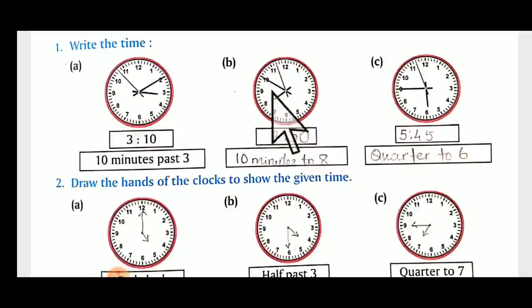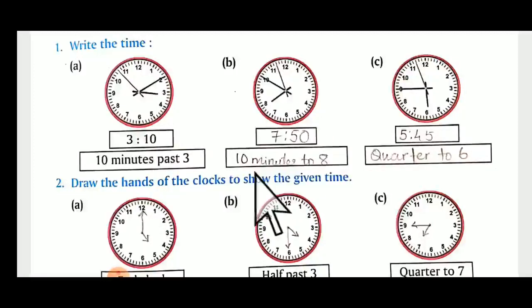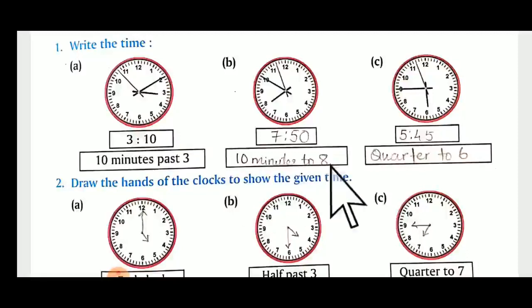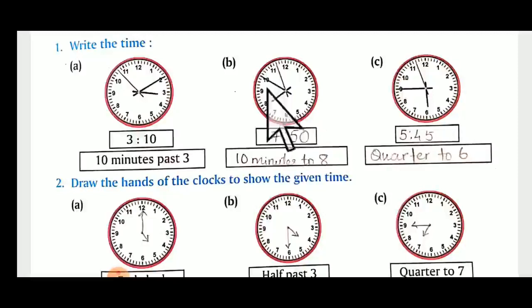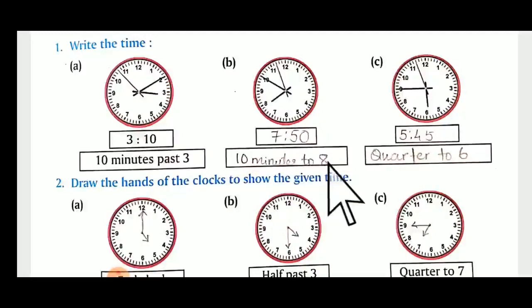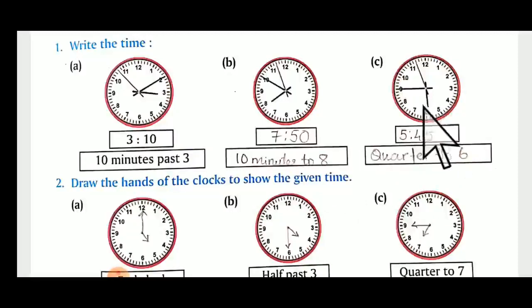If the minute hand reaches to twelve it will be eight o'clock. So how will you write in words? Ten minutes to eight. That means if it is before fifteen minutes we are going to write like this — ten minutes to eight.